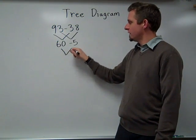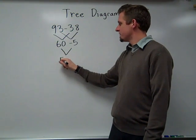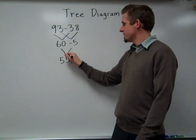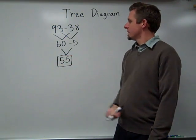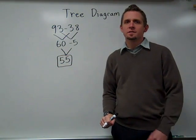60 and the negative 5 give us 55. So our answer is we have 55 more miles left to go.